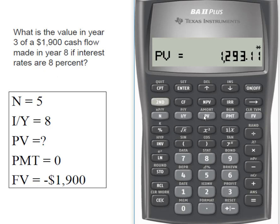And so what this tells me is that if I am going to get $1,900 in year eight, in year three, that cash flow is worth $1,293.11. I hope this helped. If you need more help, come visit me on my YouTube.